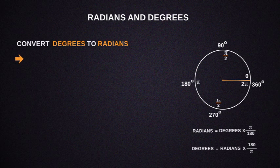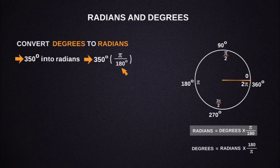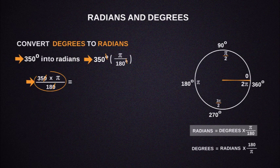Now let's see how to convert 350 degrees into radians according to the formula. Radians equals 350 degrees times pi by 180 degrees. The degree units cancel, then radians equals 350 times pi by 180. Next, we cancel out the 0 in 350 and the 0 in 180.